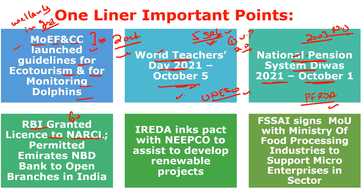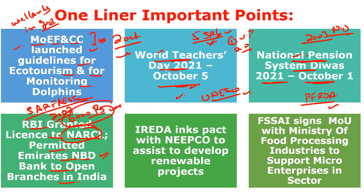RBI granted a licence to NARCL: the Reserve Bank of India gave a licence to the 6,000 crore rupees National Asset Reconstruction Company Limited (NARCL) to start operations on bad loans. This licence was granted under the SARFAESI Act (Securitisation and Reconstruction of Financial Assets and Enforcement of Security Interest Act) of 2002. RBI also permitted Emirates NBD Bank — a government-owned bank of the United Arab Emirates based in Dubai — to open two more branches in India.